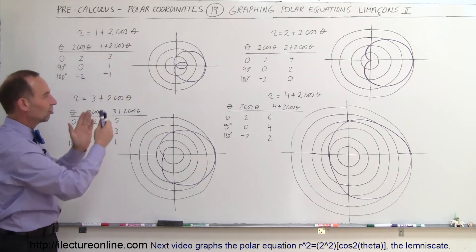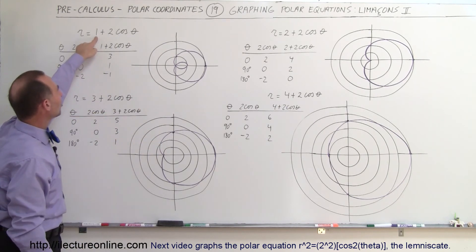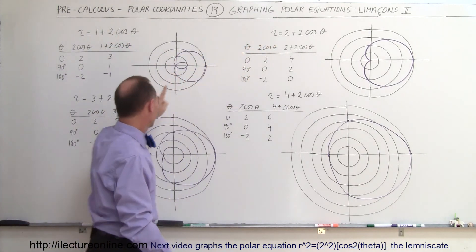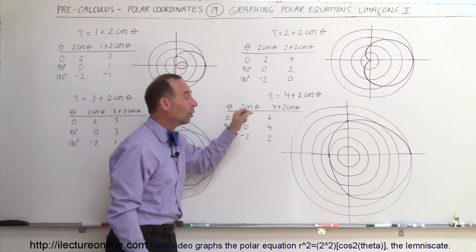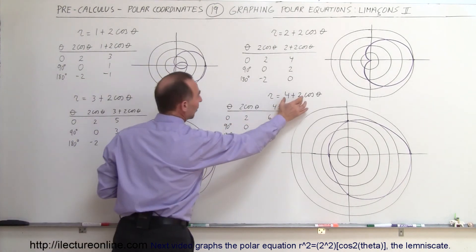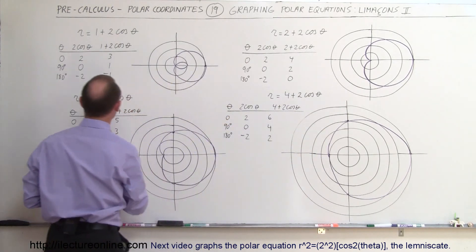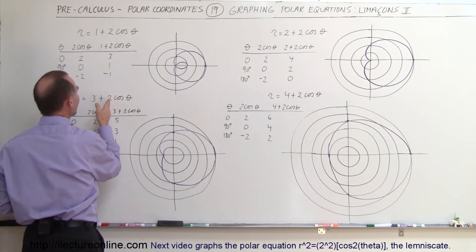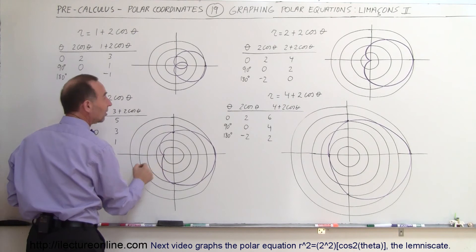So there you can see the various shape changes, simply by changing this constant from 1 to 2 to 3 and then to 4. And notice that in the case that it's at least twice as much, you no longer get an indentation. If it's between the same value and twice as much, you get a little indentation.